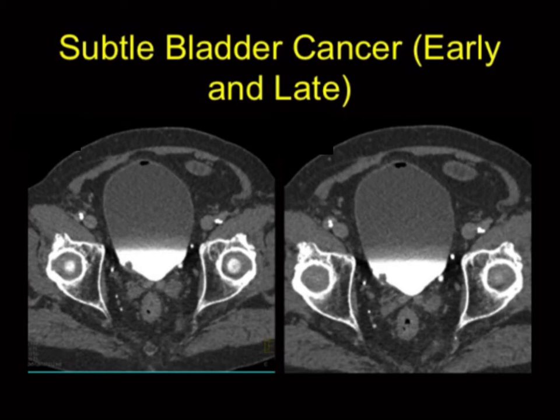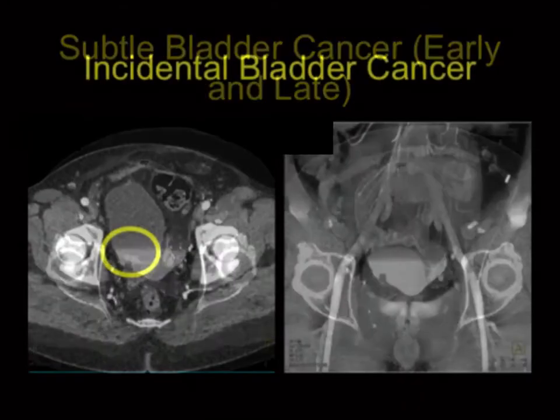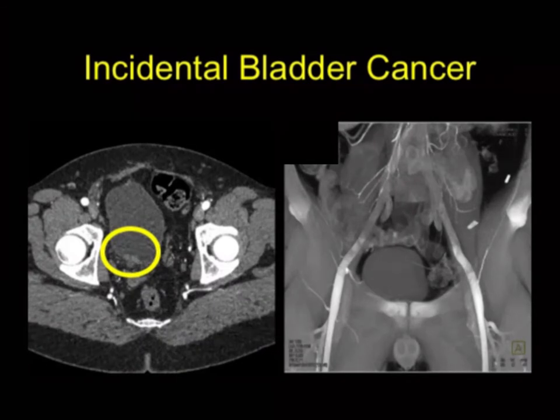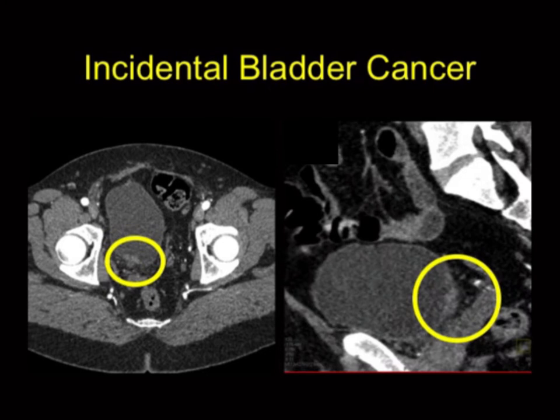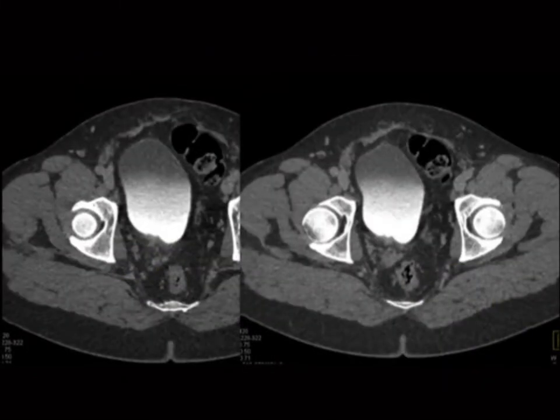In this case, you see little enhancement posteriorly — maybe it's averaging with the prostate, maybe not. On the sagittal view, there it is: an enhancing lesion, about a centimeter in size. Posteriorly, you tend to assume partial averaging. It's not partial averaging — it's a bladder cancer. When I put the circle there it's much more obvious. And look at delayed phase imaging — look how hard it is to see.